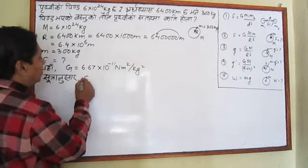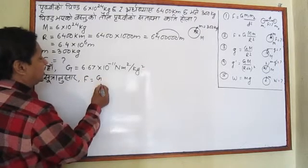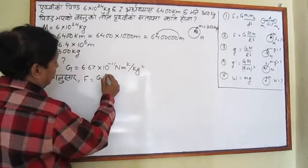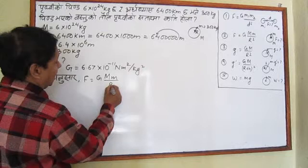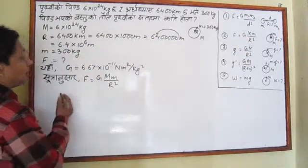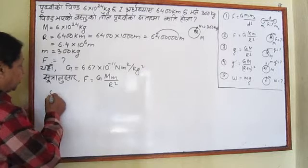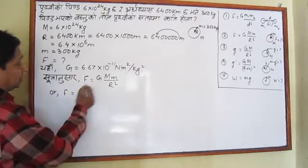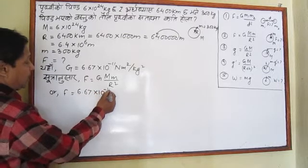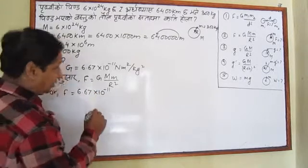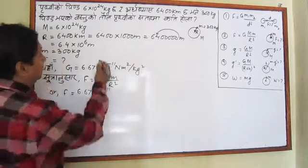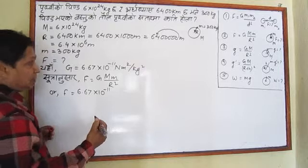Capital F equals capital G, capital M, small m, divided by R square. This is the sutra — the formula. So we write: F equals G, which is 6.67 into 10 to the power minus 11. We have to write the whole expression and then work through it in the process.